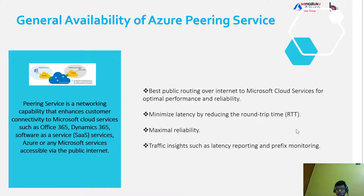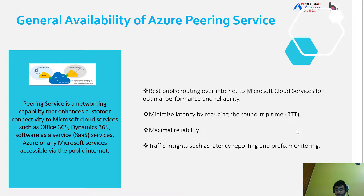So here the network will still flow over a public connection, but it will not bounce around the internet before reaching its destination. The data will enter and get the high throughput of Microsoft's backbone network as soon as possible.